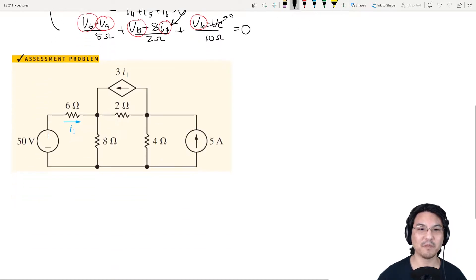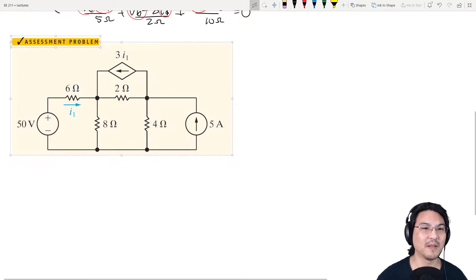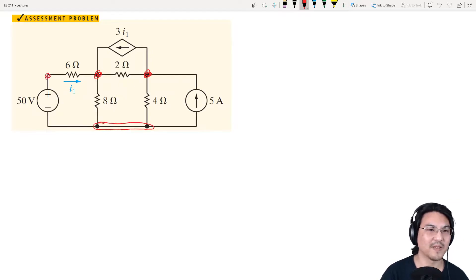Let's try one more example. So for this one, where are the essential nodes? Here, here, here, here. This is not. So I'll just call this A and B and C. Let's pick a reference. A has four elements connected, B has four, C has four. So any of the three would be a good choice. I'll just pick this one.